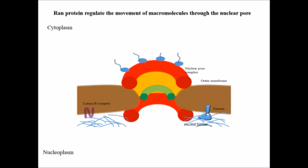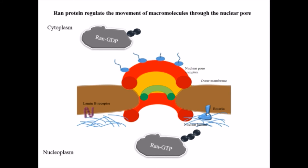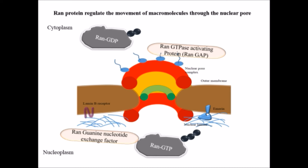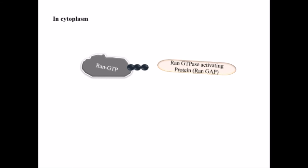Ran is a GTP-binding protein that assists in transportation across the nuclear pore through different concentrations of its GTP-bound form. In the cytoplasm there is a higher concentration of Ran-GDP, while the nucleoplasm contains a high amount of Ran-GTP. This is regulated by RanGAP — Ran GTPase-activating protein — present in the cytoplasm, and RanGEF — Ran guanine nucleotide exchange factor — present in the nucleoplasm.